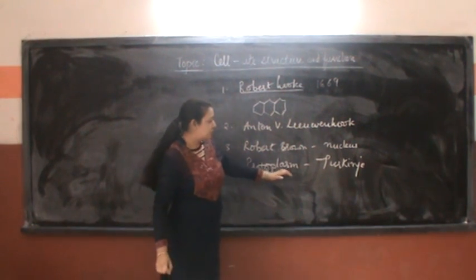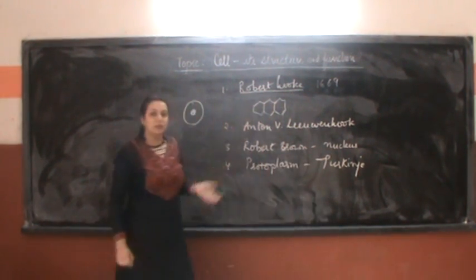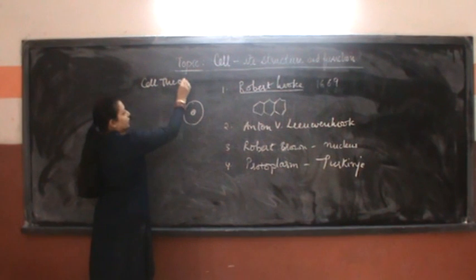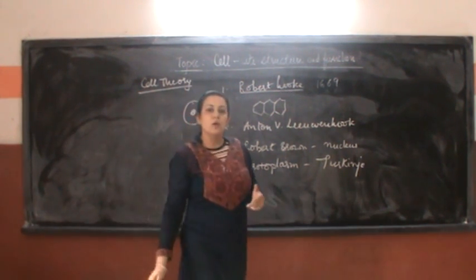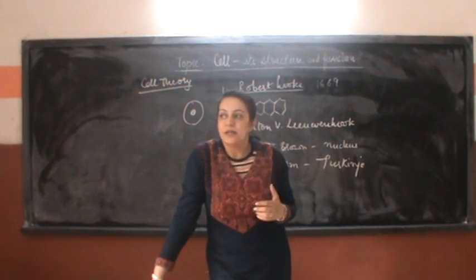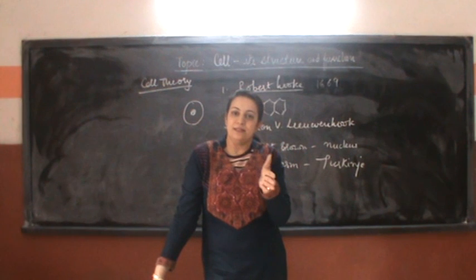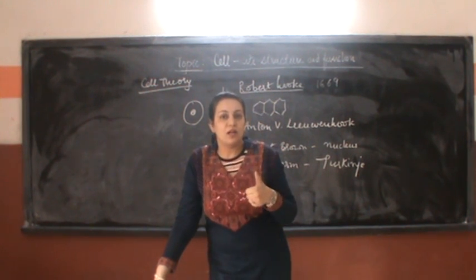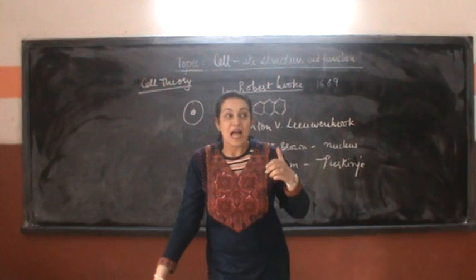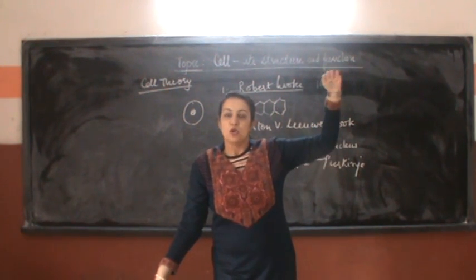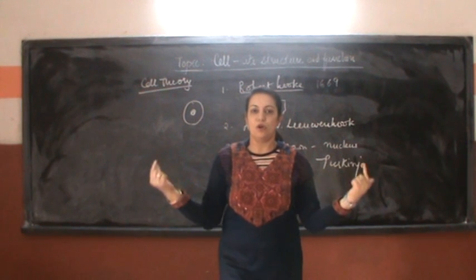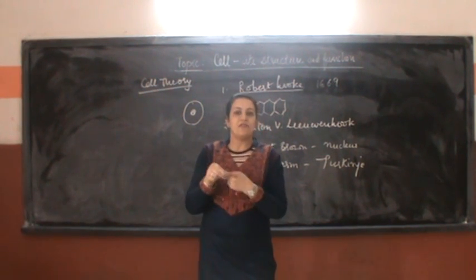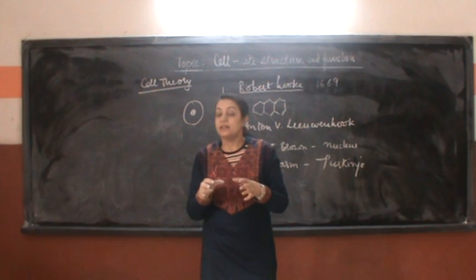Now, to understand these terms — protoplasm, nucleus, and what the cell is — we need to study the cell theory of life, which was given by Schleiden and Schwann. These two scientists concluded and postulated that according to the cell theory, all living organisms are made up of cells — the basic structural and functional component of life. As a building is made up of bricks, so our body is made up of a collection of cells. All cells have a basic structure and are similar in their function.